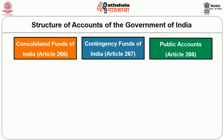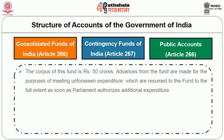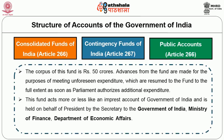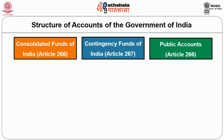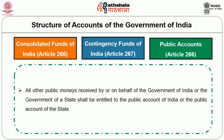Second, Contingency Fund under Article 267 — according to this, the Parliament may by law establish a contingency fund into which shall be paid from time to time such sums as may be determined by such law, and such funds shall be placed at the disposal of the President. Third, Public Account under Article 266, Sub-clause 2 — it states that all other money received by or on behalf of the Government of India shall be credited to the Public Account of India.